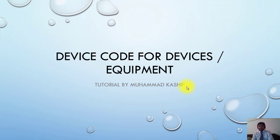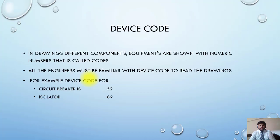This is also very important basic and professional engineers should be able to understand the device codes. In drawings, different components and equipment are shown with numeric numbers that is called codes. All engineers must be familiar with the device code to read the drawings.